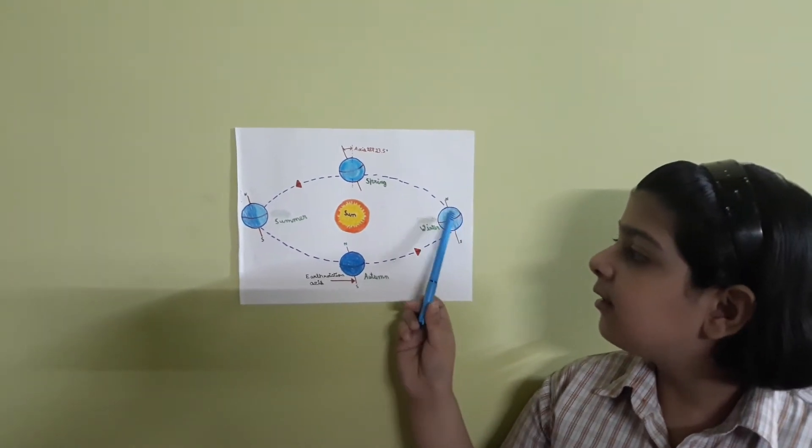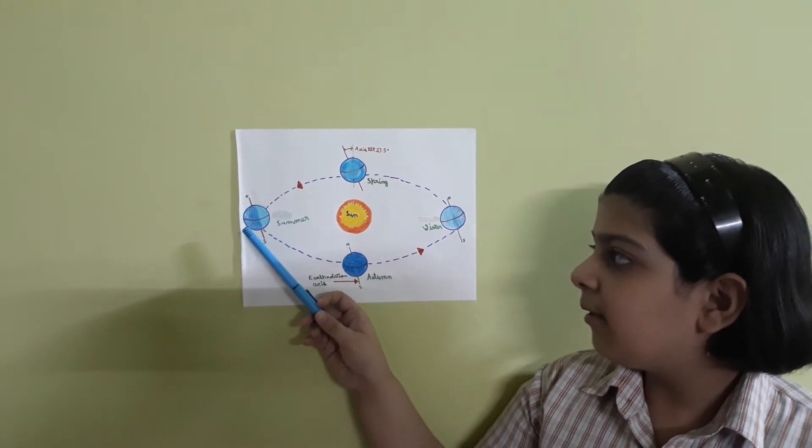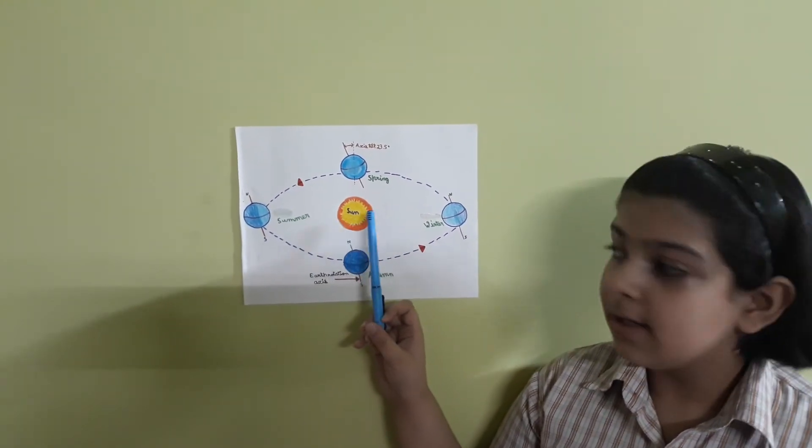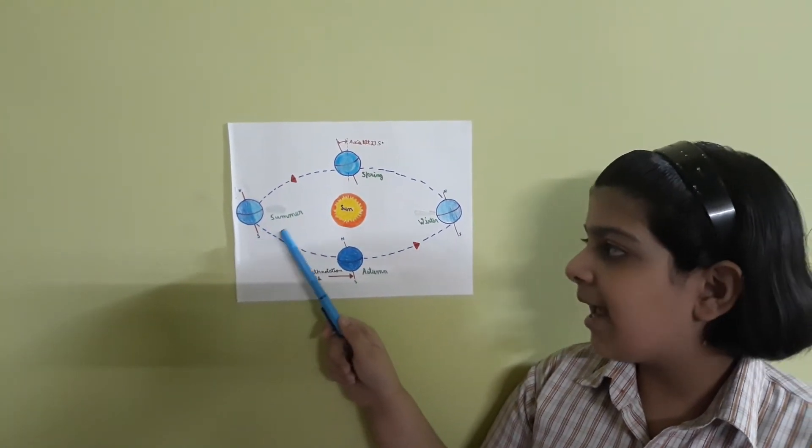As the earth revolves, the northern hemisphere gets tilted away from the sun and the southern hemisphere gets tilted towards it. Now, the northern hemisphere has winter and the southern hemisphere has summer.